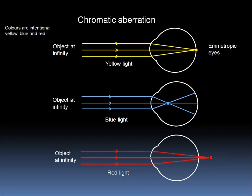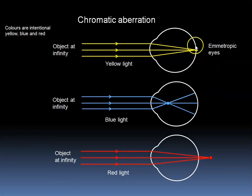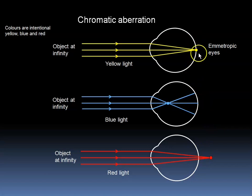In other words, an image point at infinity is not focused to a sharp image point on the retina, but to a series of points and blur circles depending on the wavelength.